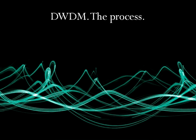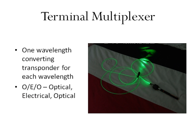Now let's talk about the process of DWDM itself. In general, it starts at the terminal multiplexer where multiple optical signals are combined onto a single optical fiber. This signal is repeated along the way after traveling long distances, and it ends at the terminal demultiplexer where signals are separated individually and output on single fibers.